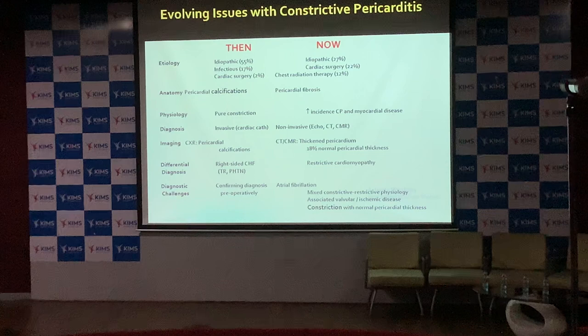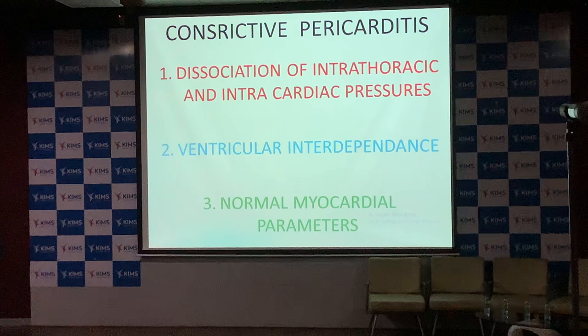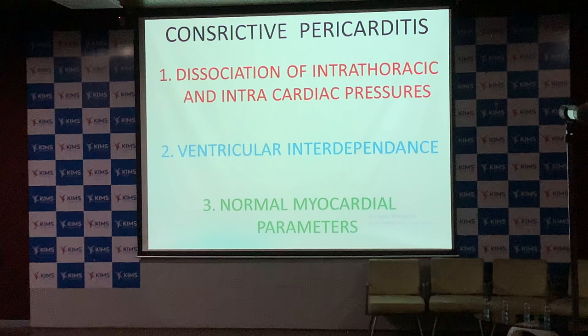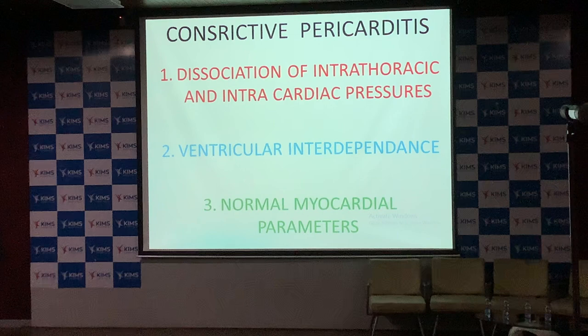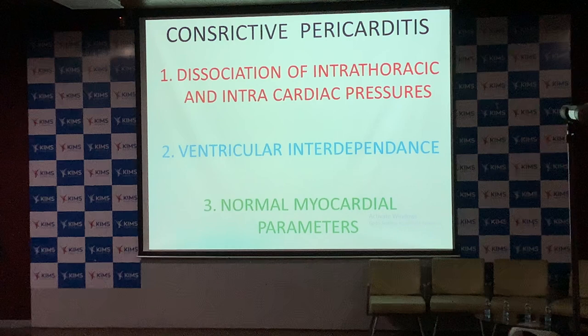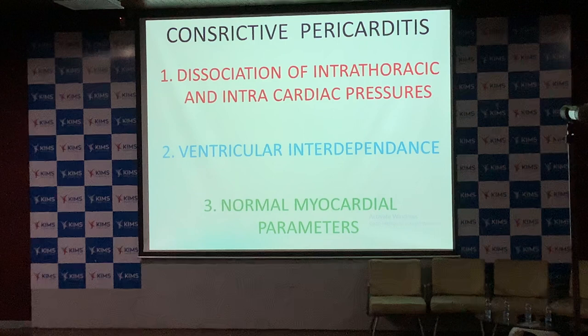This is the most important slide of the talk. What characterizes constrictive pericarditis hemodynamically? First: dissociation of intrathoracic and intracardiac pressures. The respirophasic changes that alter intrathoracic pressures are transmitted to the cardiac chambers directly in a normal heart. But once there is a tough pericardium, these changes in mediastinal pressures are not transmitted to the heart — though they are transmitted to the pulmonary veins.